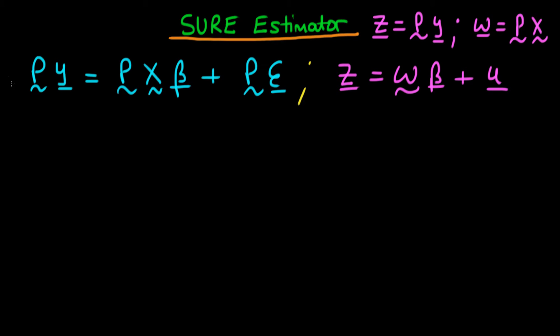In the last video, we applied a transformation matrix P to both sides of our system and derived the exact form of the transformation P. We found that it was equal to the variance covariance matrix of the system, capital sigma, all to the power minus a half. I spoke about how this is exactly the same form as GLS, because essentially a Schur estimator is a type of GLS estimator.